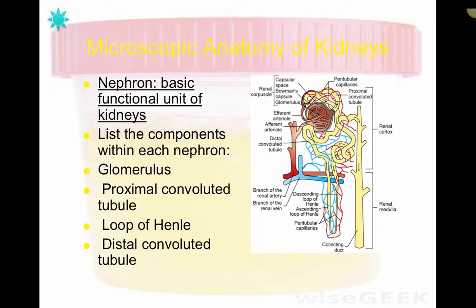The nephron is located partially in the cortex and partially in the medulla. The parts housed within the cortex are the glomerulus, the proximal tubule, and the distal tubule. The loop of Henle descends from the cortex into the medulla of the kidney and then back up into the cortex.